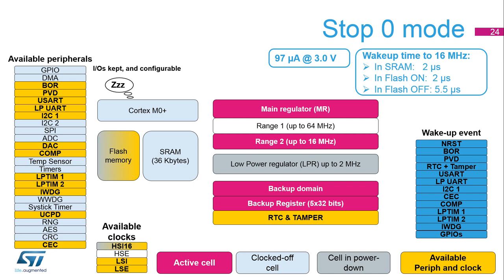Peripherals functional in stop 0 mode include: power voltage detector, digital-to-analog converters, comparators, independent watchdog, low-power timers, I2C, UART, and low-power UART. Events from all IOs can wake up from stop 0 mode, as well as interrupts generated by active peripherals. The I2C, UART, HDMI CEC, or LPUART can switch the HSI-16 on during stop mode to recognize their wake-up condition, and switch off the HSI-16 after receiving the frame if it is not a wake-up frame. In this case, the HSI-16 clock is propagated only to the peripheral requesting it. The stop 0 mode consumption typical at 3V is 97 microamps when HSI is disabled, and 276 microamps when HSI is enabled.